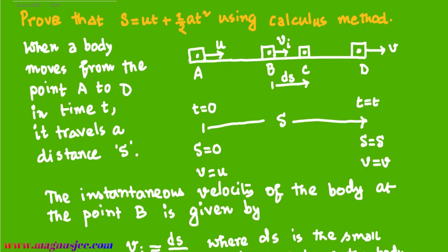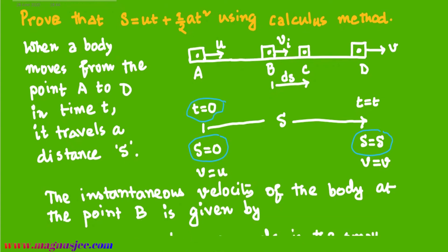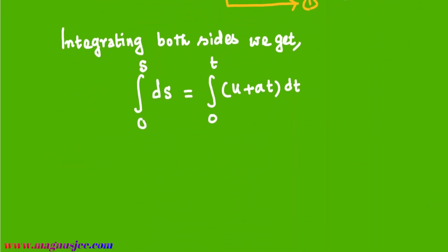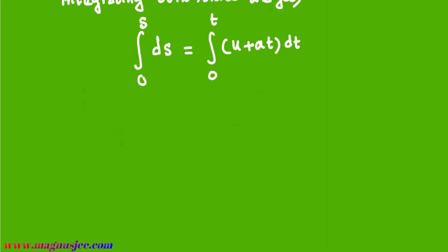From the diagram we can explain the limits of time and displacement. When the body was at point A, displacement was 0 — so the lower limit of displacement is 0. When the body reaches point D, displacement becomes s — so the upper limit is s. Similarly, limits of time are 0 and t. Integrating ds gives s, evaluated from 0 to s.